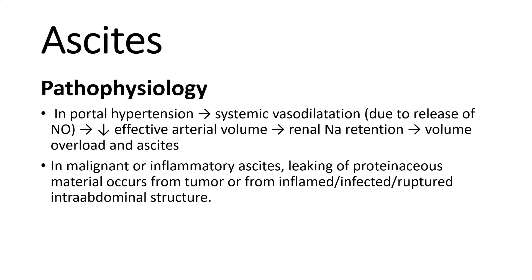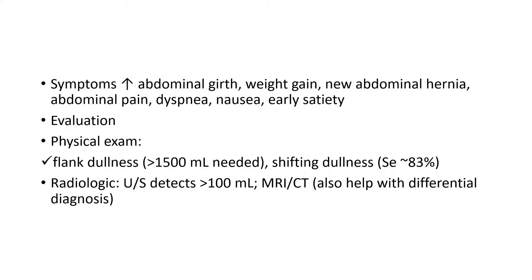In malignant or inflammatory ascites, leakage of protein material occurs from tumor or from inflamed, infected, or ruptured intra-abdominal structures. Symptoms due to ascites include increased abdominal girth, weight gain, new abdominal hernia, abdominal pain, dyspnea, nausea, and early satiety.